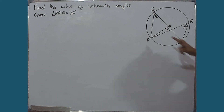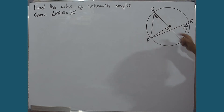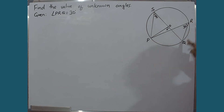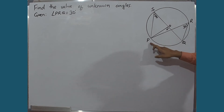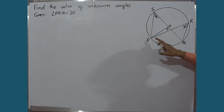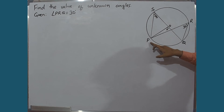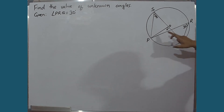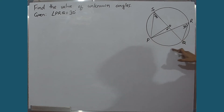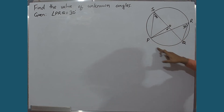We have to find the value of angle POQ, that is x, and angle PSQ, that is y. We have been given the value of angle PRQ as 30 degrees. Angle PRQ is the inscribed angle subtended by arc PQ, and angle POQ is the central angle subtended by arc PQ. Both angles POQ and PRQ are subtended by the same arc PQ.